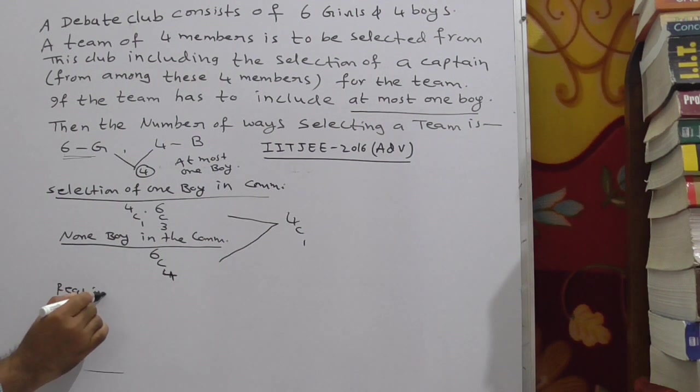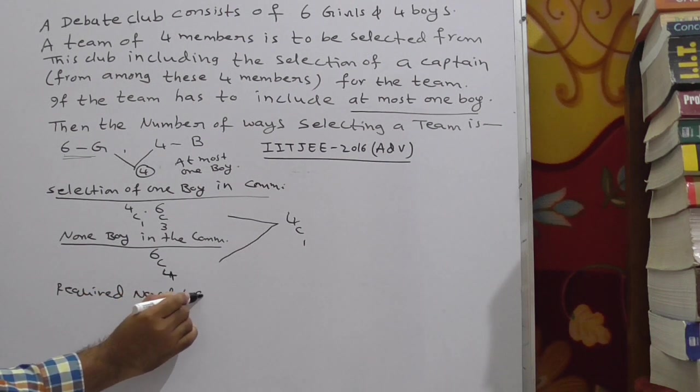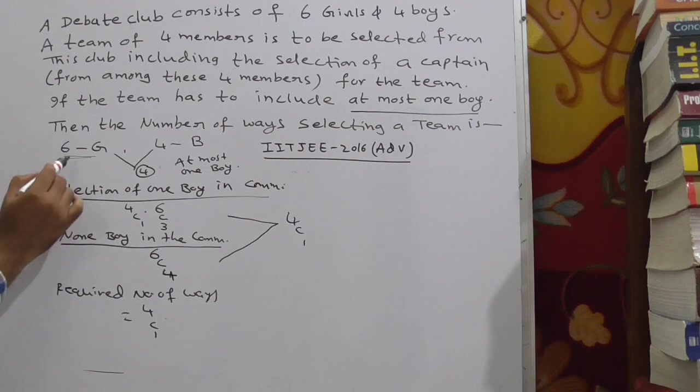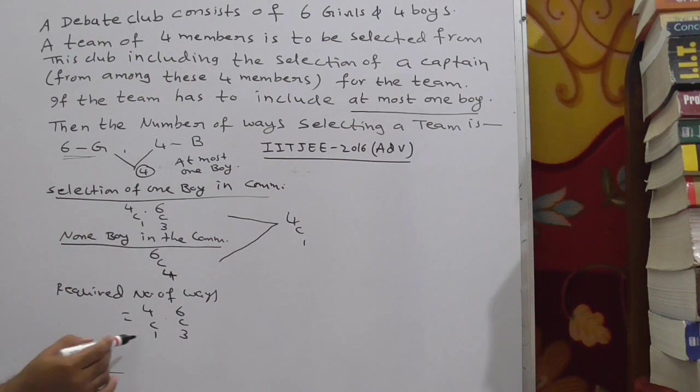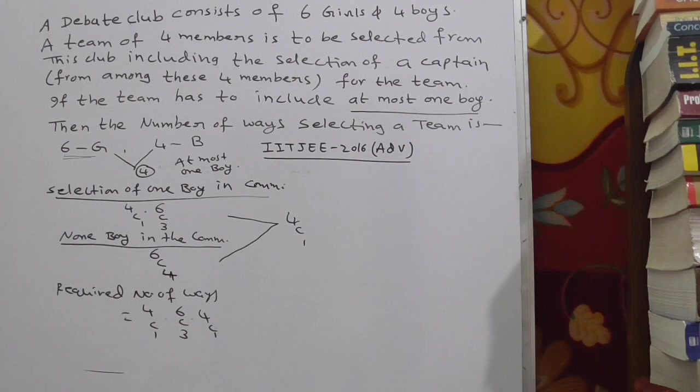Required number of ways. In the first case, 1 boy from given 4 boys into 3 girls from given 6 girls. Total 1 plus 3, 4. And from these 4 you have to select 1 captain in 4C1 ways. Plus in second case,